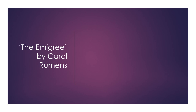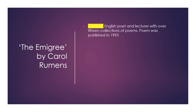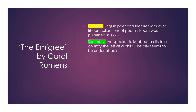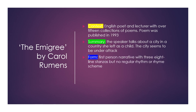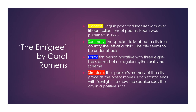The Emigree by Carol Rumens. She is an English poet and lecturer with over 15 collections of poems, and this poem was published in 1993. The speaker talks about a city and a country she left as a child; the city seems to be under attack. The form is first person narrative with three eight-line stanzas but no regular rhythm or rhyme scheme. The speaker's memory of the city grows as the poem moves, and each stanza ends with 'sunlight' to show the speaker sees the city in a positive light.